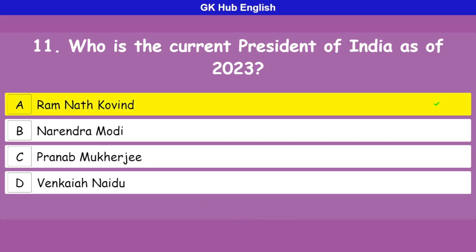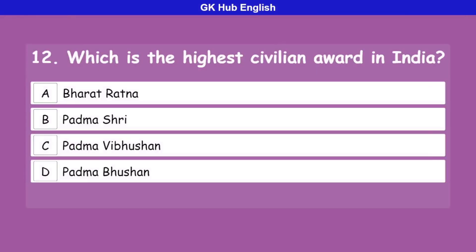Question 12: Which is the highest civilian award in India? Option A is Bharat Ratna, option B is Padma Shri, option C is Padma Vibhushan, option D is Padma Bhushan. Correct answer is Bharat Ratna.